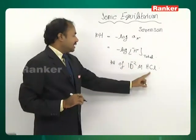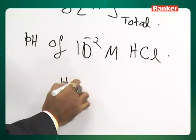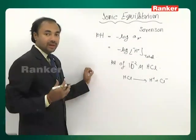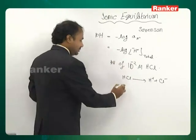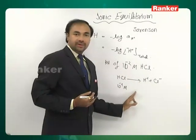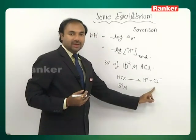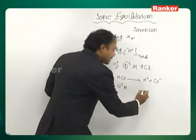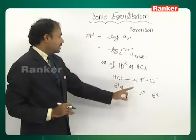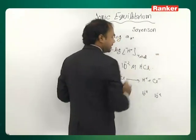HCl, because of being a strong electrolyte, dissociates completely to give H⁺ and Cl⁻ ions. So we get HCl giving H⁺ and Cl⁻ ions. If you have 10⁻² molar HCl, this will dissociate completely. One mole of HCl gives one mole of H⁺ and one mole of Cl⁻, so 10⁻² M HCl gives 10⁻² M H⁺ and 10⁻² M Cl⁻.